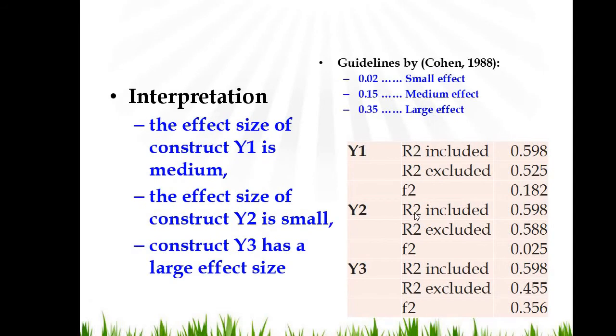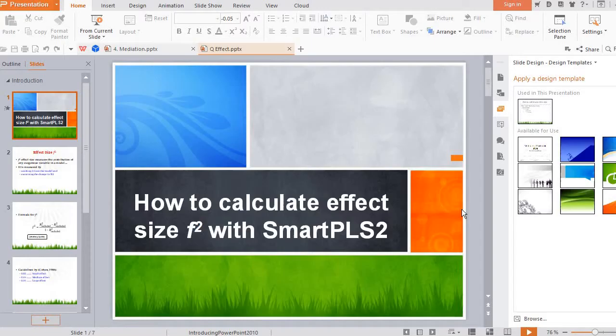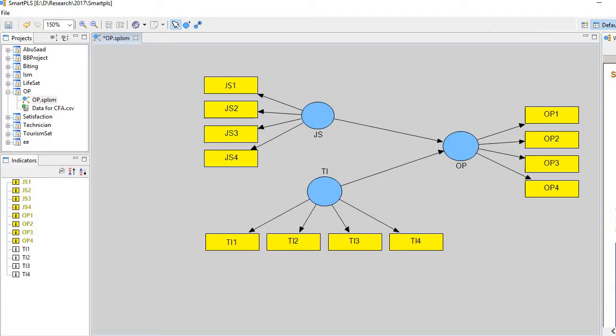So now let's proceed towards SmartPLS 2. Here is our model, and OP is the dependent variable, meaning endogenous variable.